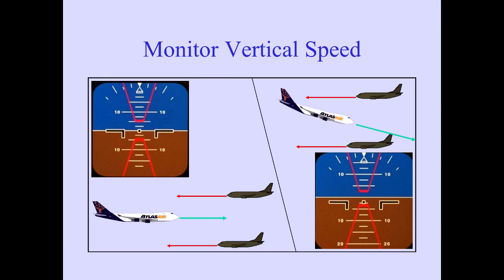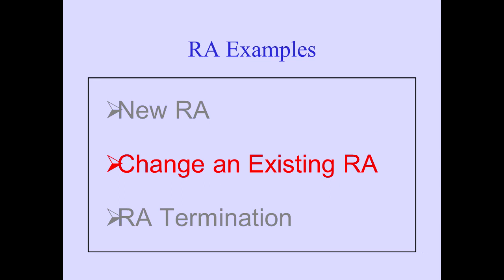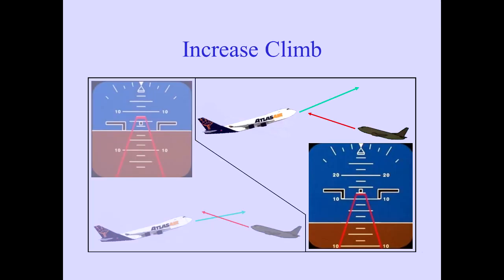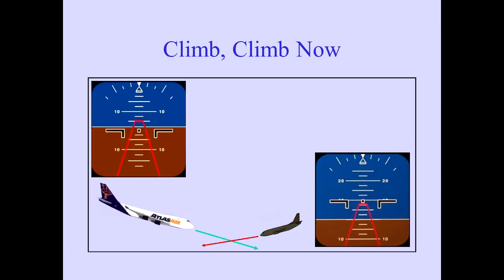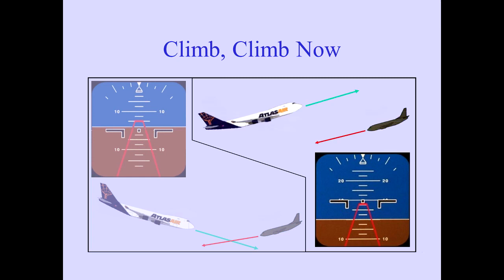If the Monitor Vertical Speed command sounds, avoid deviation into the red area. Next, let's discuss situations where TCAS must change an existing RA. The Increase Climb RA increases pitch of an existing Climb RA: 'Increase Climb, Increase Climb.' TCAS changes the pitch command on the PFD. If the Climb, Climb Now command is given, TCAS reverses an existing RA descent to a climb. The transition to a climb must be promptly and smoothly accomplished.